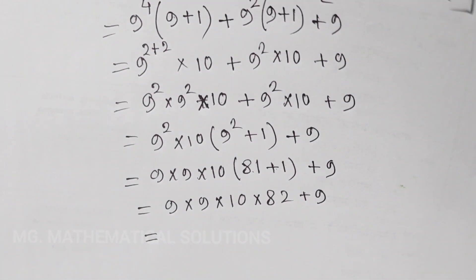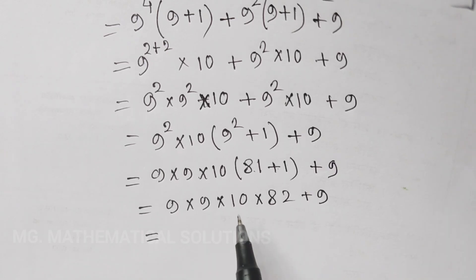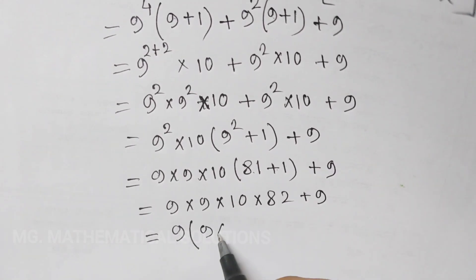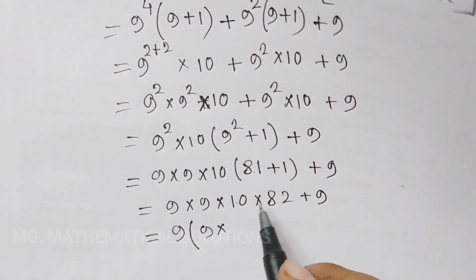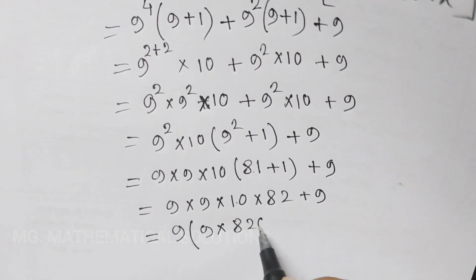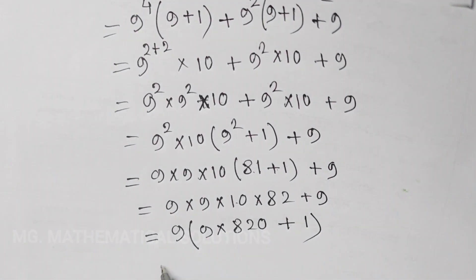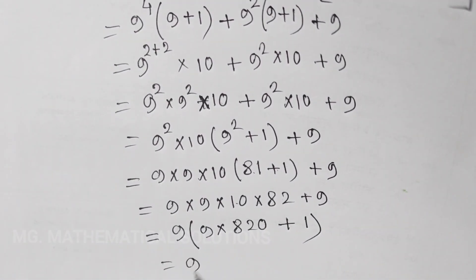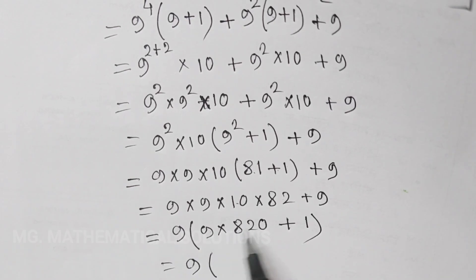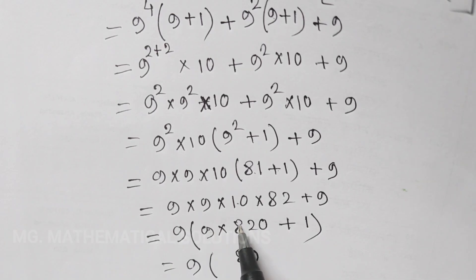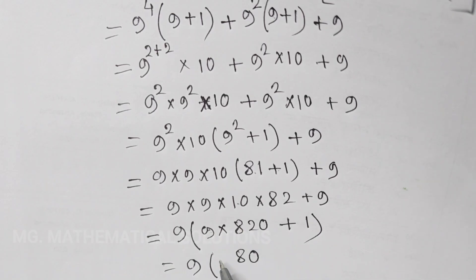Equal to. Here we take 9 common. We get 9 into 10 into 82, which means 820. Plus 1 equals 821. Equal to 9 into 821. Now computing: 9 times 0 is 0, 9 times 2 is 18, and 9 times 8 is 72, plus 1 gives 73.